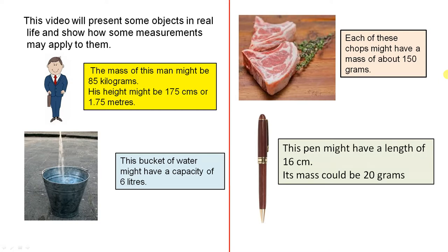This pen might have a length of 16 centimeters. Its mass could be 20 grams. Depending on the instrument, it could be a pencil or a different type of pen. It might be slightly longer or slightly smaller and the mass could also vary slightly.